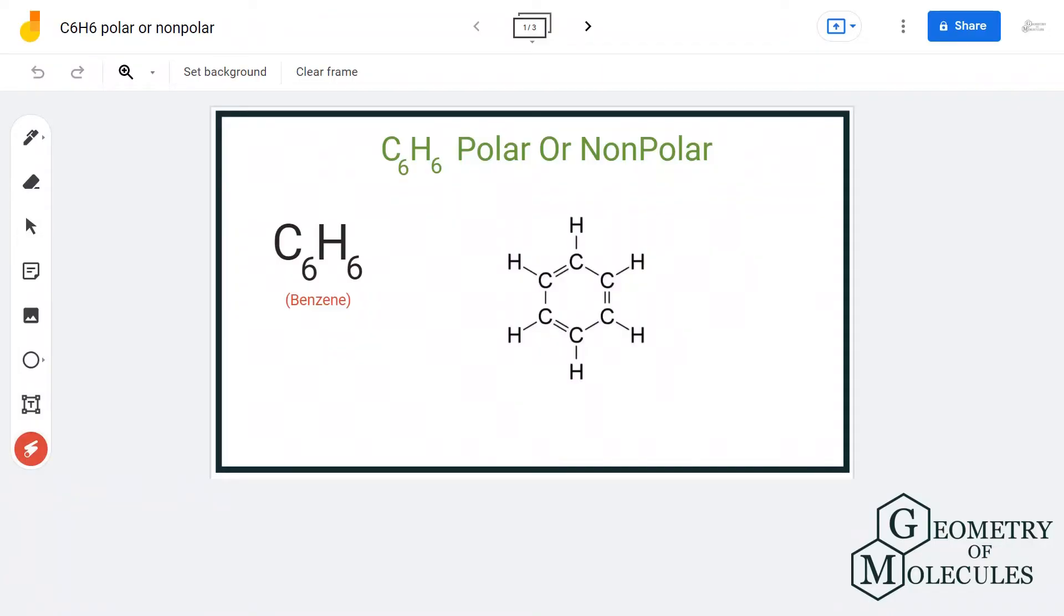Hi guys, welcome back to our channel. In today's video we are going to help you determine if benzene is a polar or non-polar molecule. If you look at its Lewis structure, it is quite symmetrical because there are six carbon atoms and six hydrogen atoms forming bonds with each other.